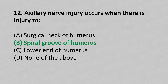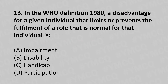Moving to our thirteenth question. In the WHO definition 1980, a disadvantage for a given individual that limits or prevents the fulfilment of a role that is normal for that individual is: Option A, environment. Option B, disability. Option C, handicap. Option D, participation. And the answer is Option C, handicap.